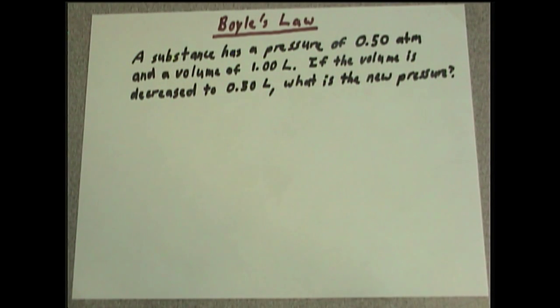Hello everybody, and welcome to the Chemistry 121 Supplemental Instruction series of videos. In this video, we're going to be doing a practice problem using Boyle's Law. The problem reads: a substance has a pressure of 0.50 atmospheres and a volume of 1 liter. If the volume is decreased to 0.5 liters, what is the new pressure?